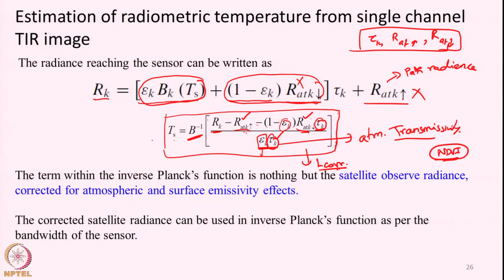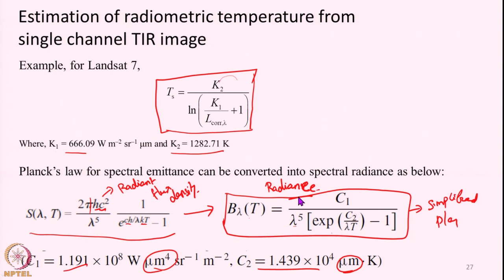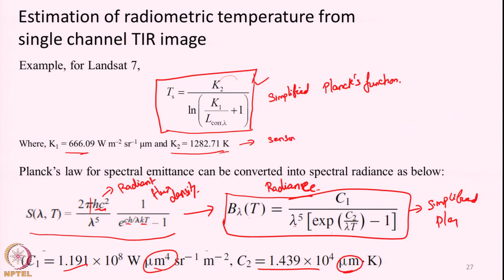As a brief summary, here is the equation used for retrieval of LST. It is the inverse Planck's function of the radiance received at the sensor after being corrected for atmospheric effect and surface emissivity. We substitute values into this simplified Planck's function — I call it simplified because it uses sensor-specific constants k1 and k2 that vary from sensor to sensor. This equation is specifically for Landsat 7 with its corresponding k values.